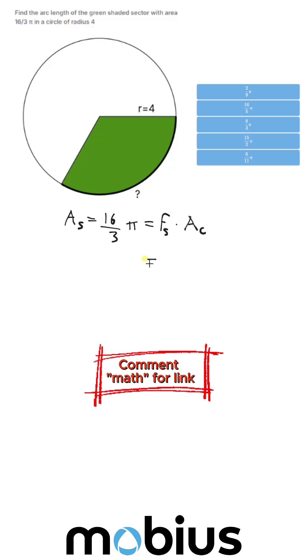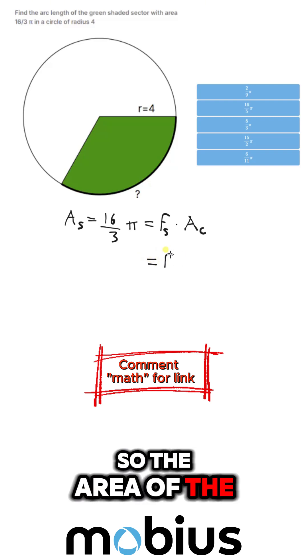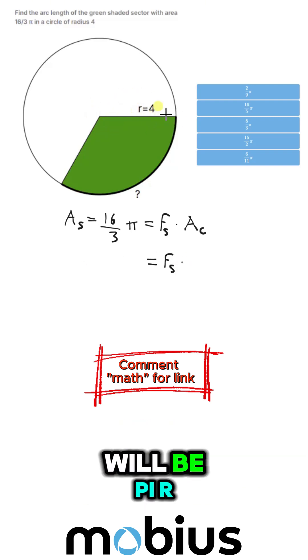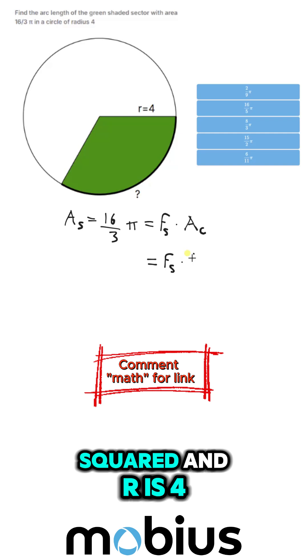So the area of the full circle, fraction of the sector, times the area of the full circle will be pi r squared, and r is 4.